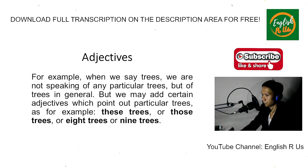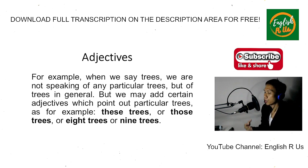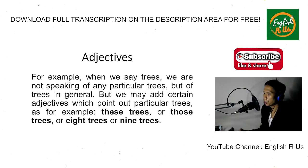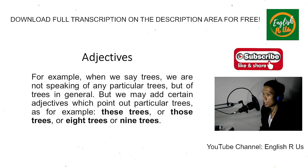We have a class of words — adjectives — which describe these various qualities. We use adjectives for other purposes also. For example, when we say 'trees' we are not speaking of any particular trees, but of trees in general. But we may add certain adjectives which point out particular trees, such as 'these trees,' 'those trees,' 'eight trees,' or 'nine trees.' These adjectives limit the trees of which we are speaking to the particular trees pointed out. They do not express qualities of the trees the way adjectives like 'tall' or 'beautiful' do, but they limit the use of the word 'trees' in its application.